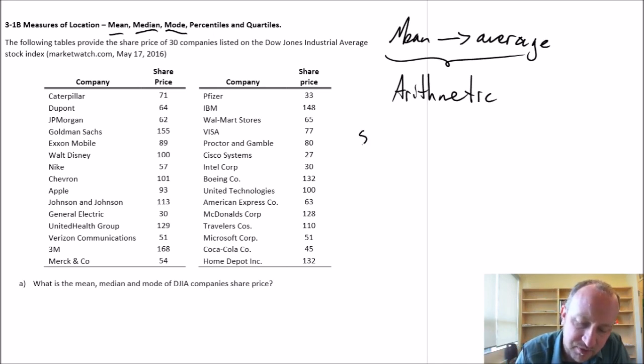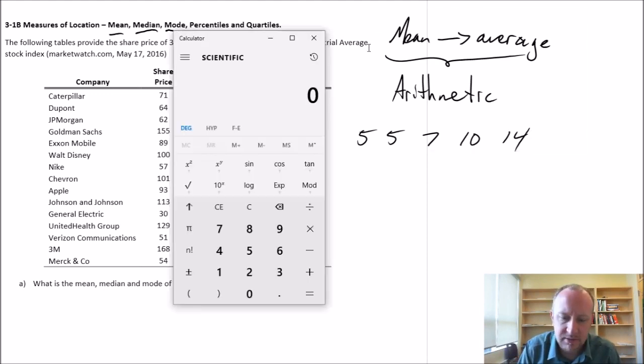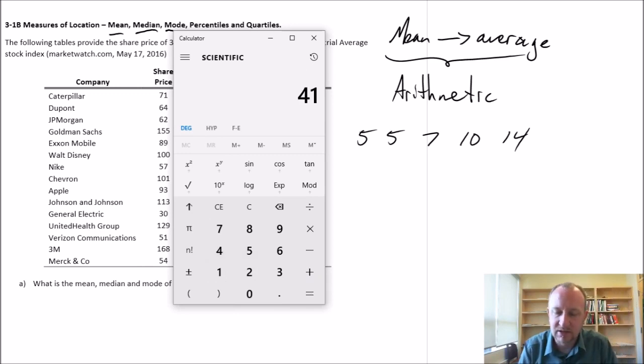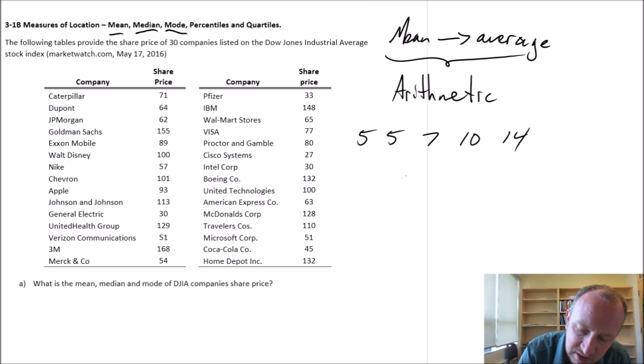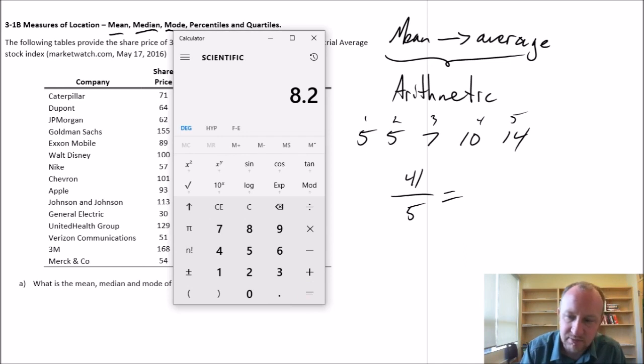So for example, if you have 5, 5, 7, 10, 14 as your different data points, then to calculate the mean, you add these together: 5 plus 5 plus 7 plus 10 plus 14, which equals 41. So the mean is 41 divided by how many observations? 1, 2, 3, 4, 5 observations. Divide that by 5, and we get what is called our arithmetic mean, which is 8.2.